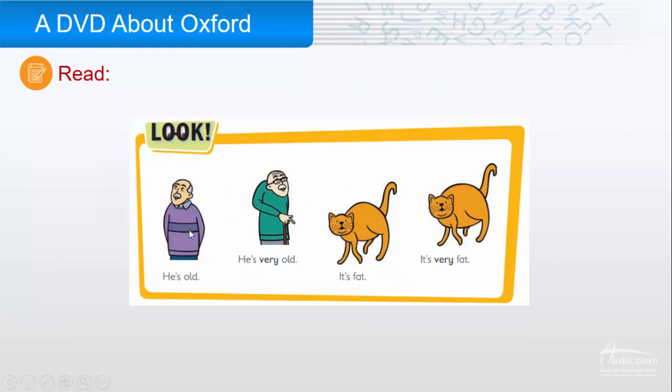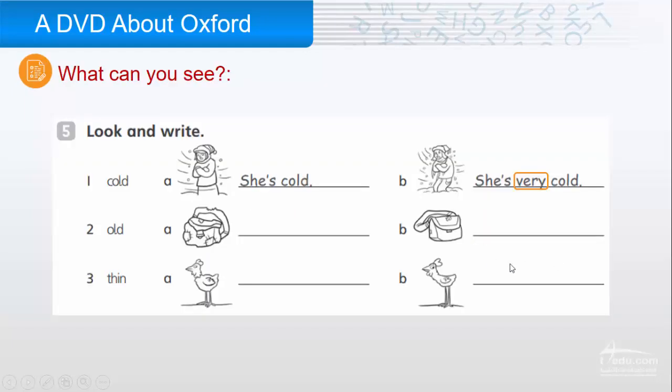Look at the pictures. Here we have two old men here. This man, he's old. But he is very old. Here we have two fat cats. It's fat. It's very fat. One, cold. She's cold. She's very cold. Look at the two bags. Old. It's very old. And this one, it's old. The chicken's thin. It's thin. B is very thin.